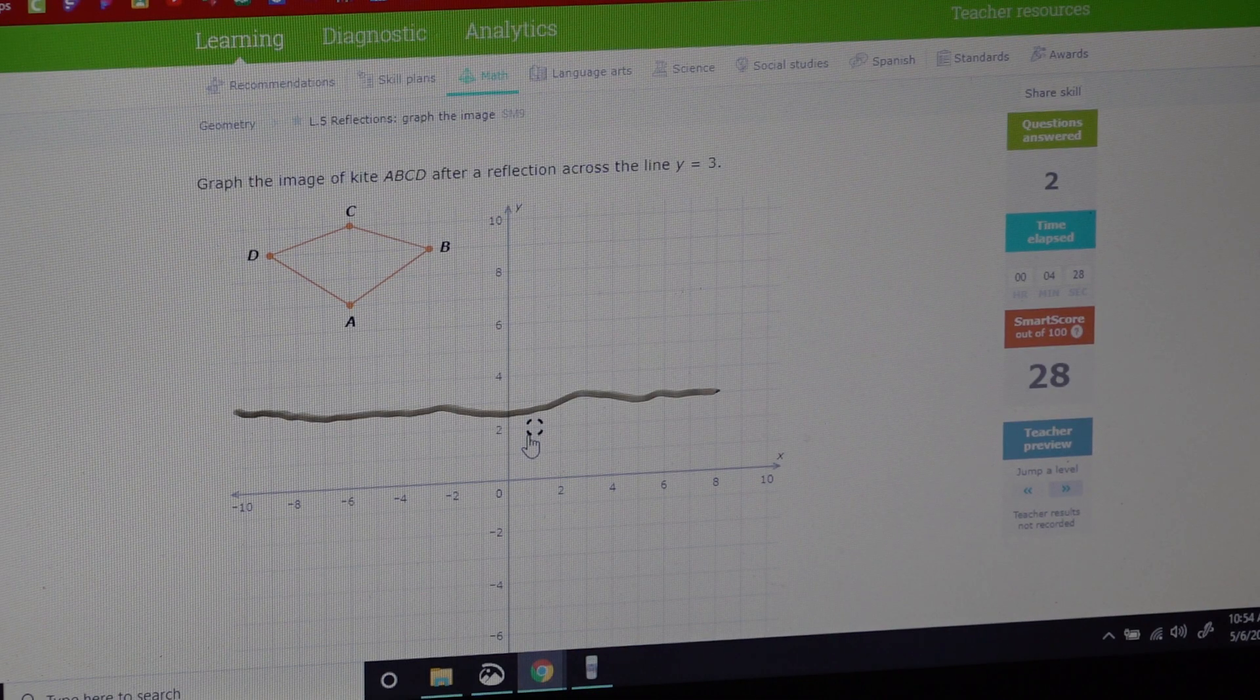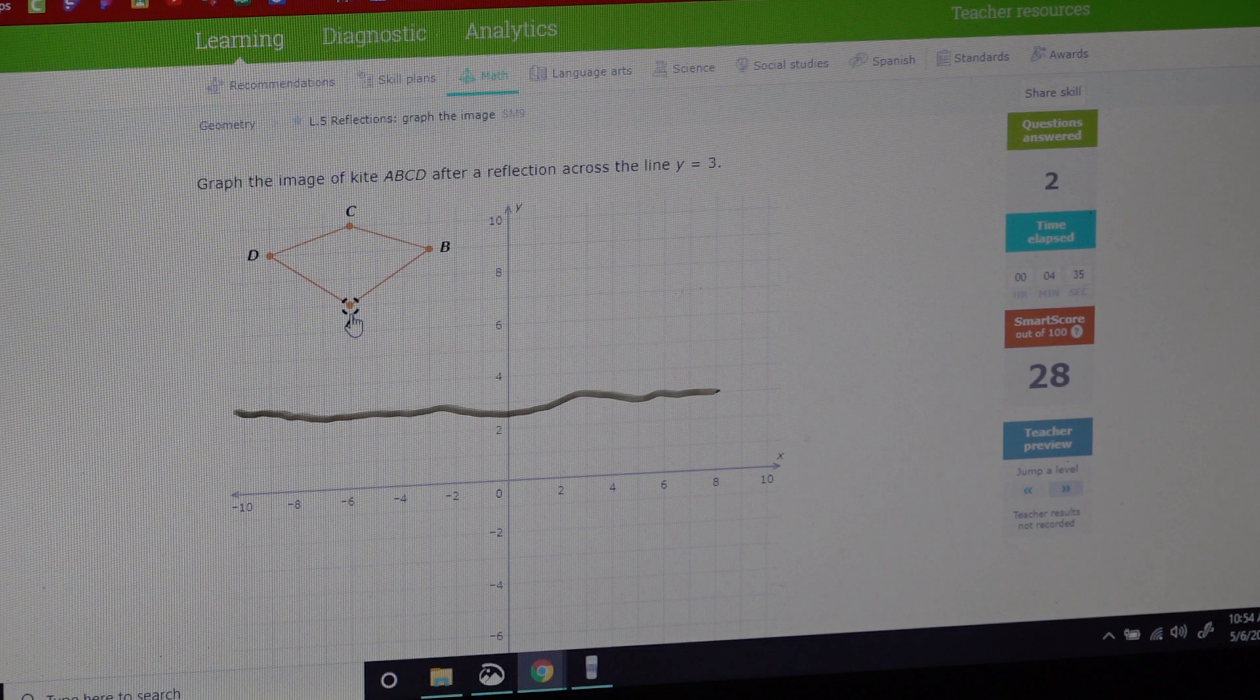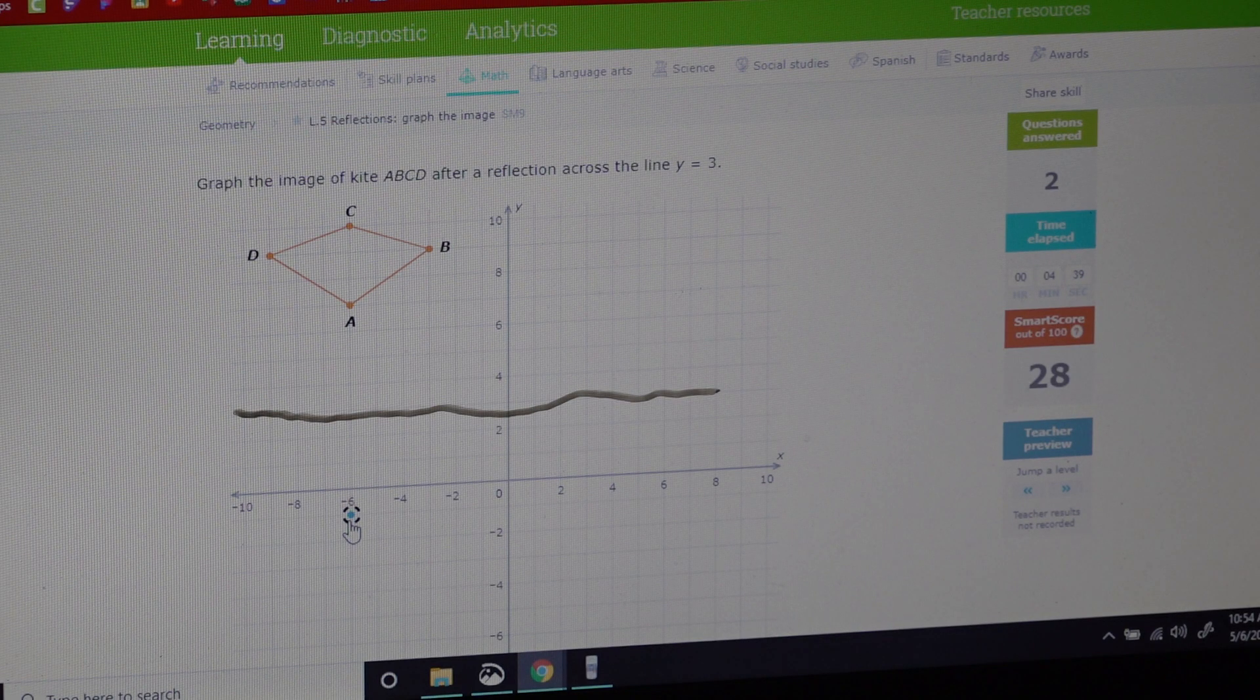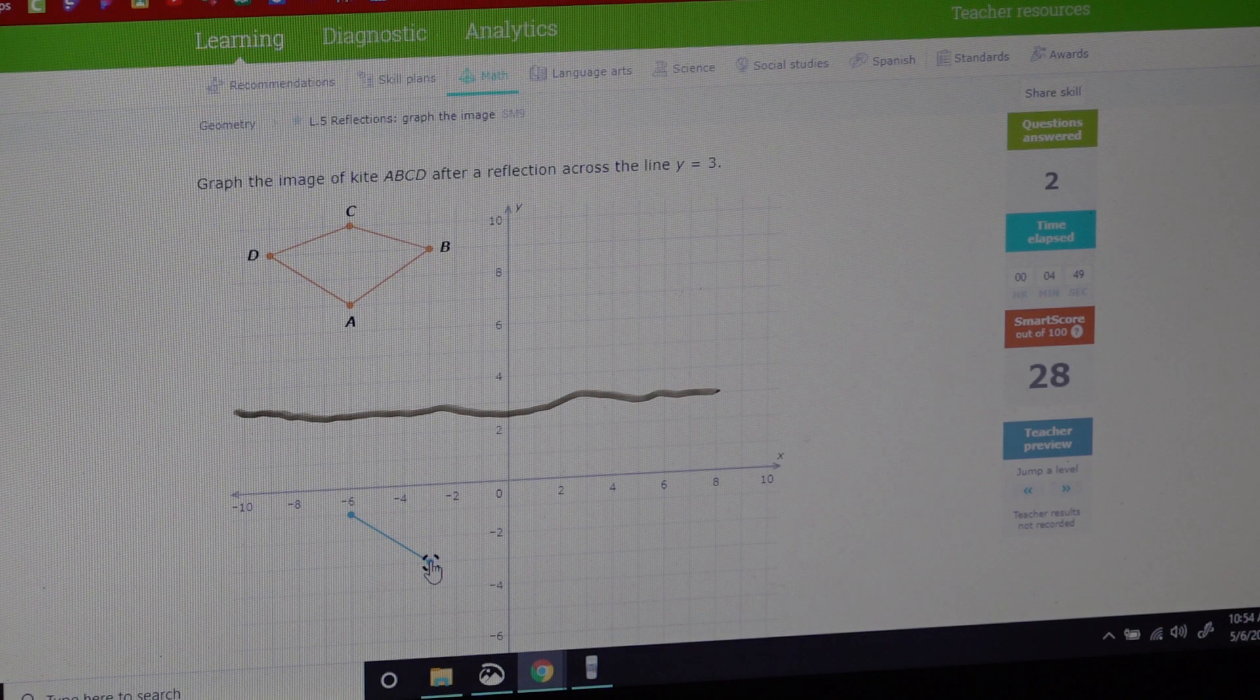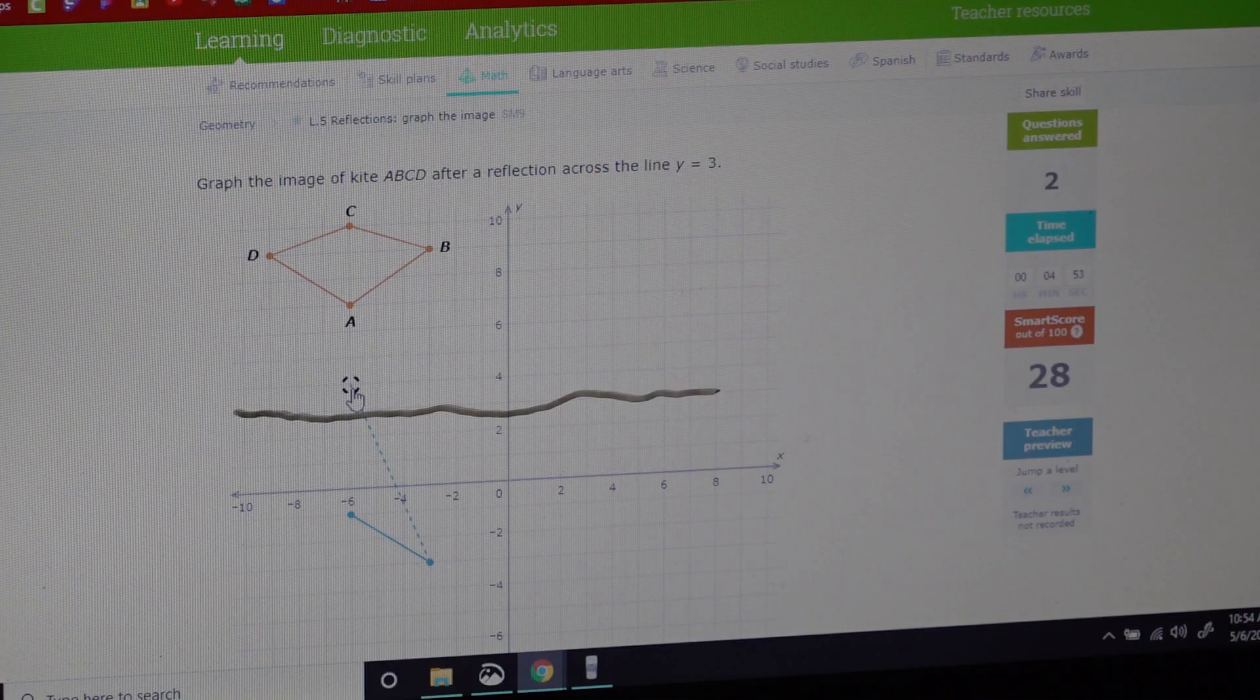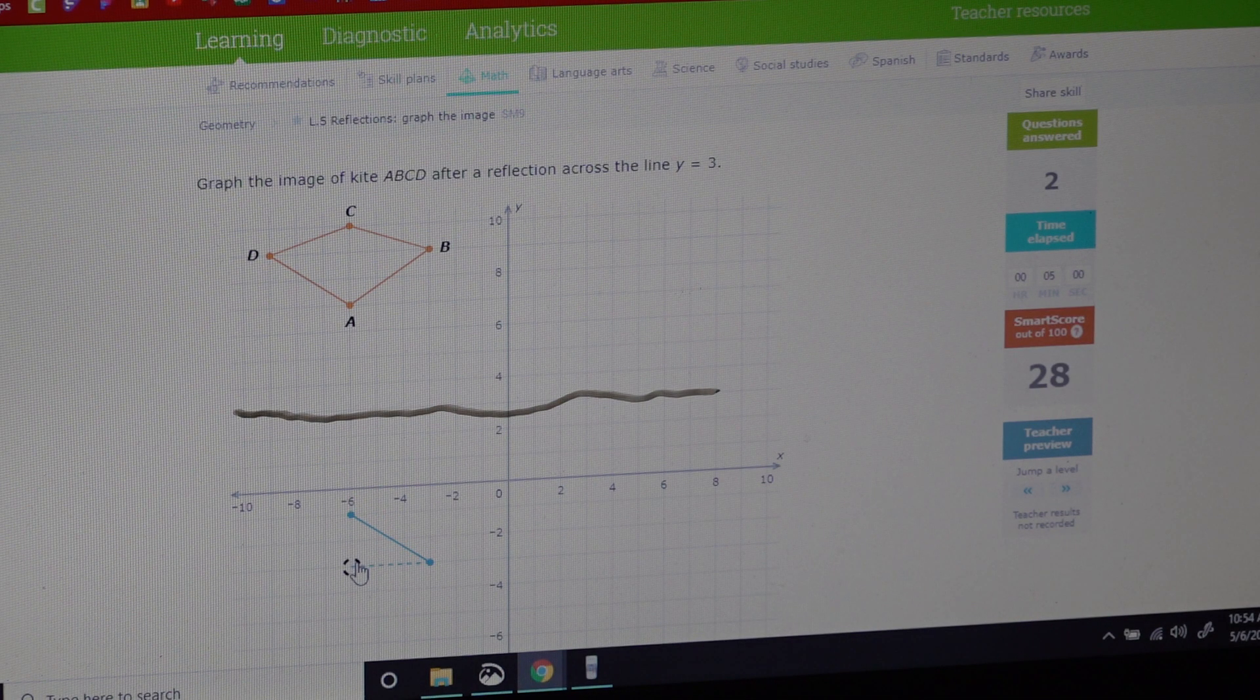From here we can do that counting trick. So one, two, three, four—one, two, three, four. Same thing for the B: one, two, three, four, five, six from the line, one, two, three, four, five, six. C: one—whoopsie daisy—one, two, three, four, five, six, seven, one, two, three, four, five, six, seven.